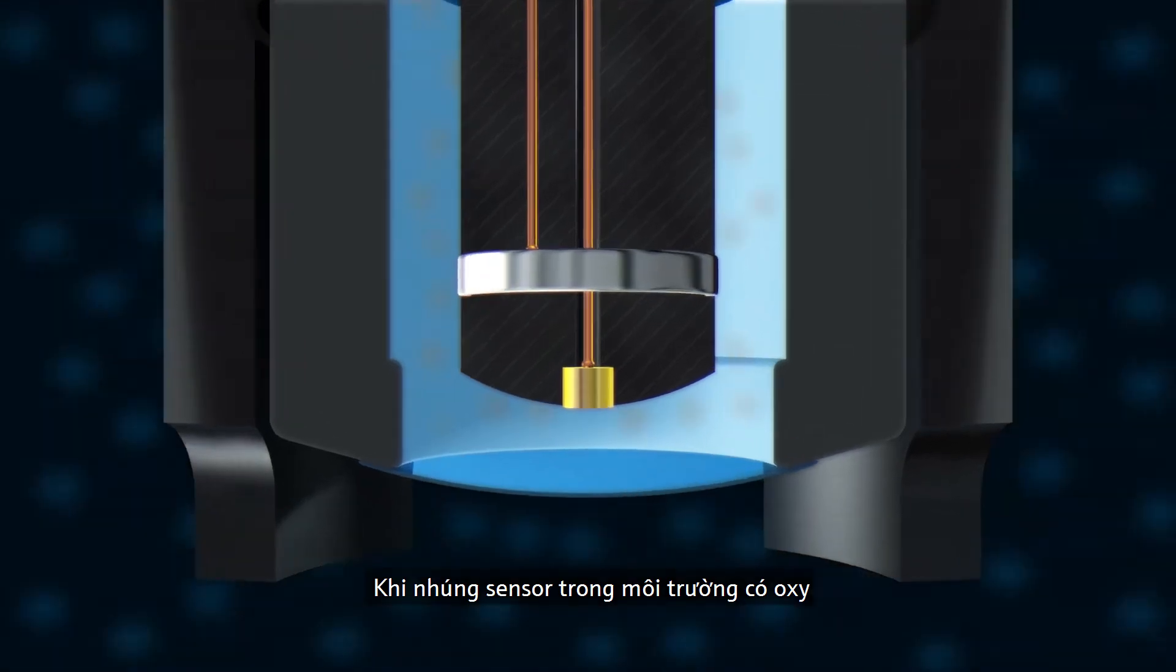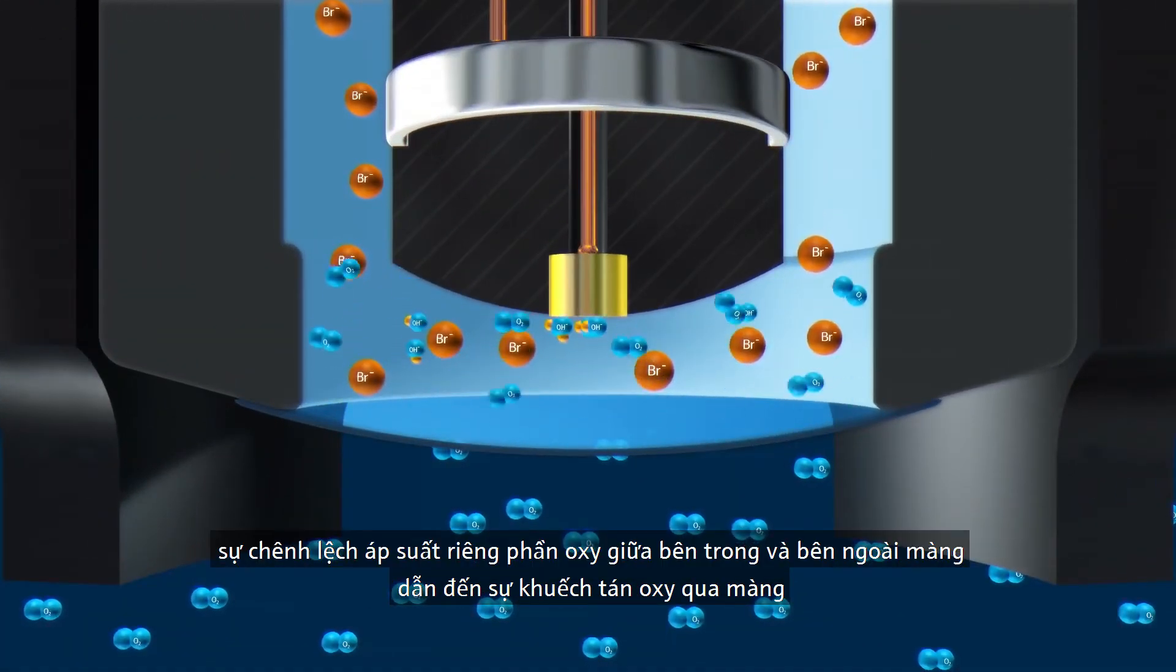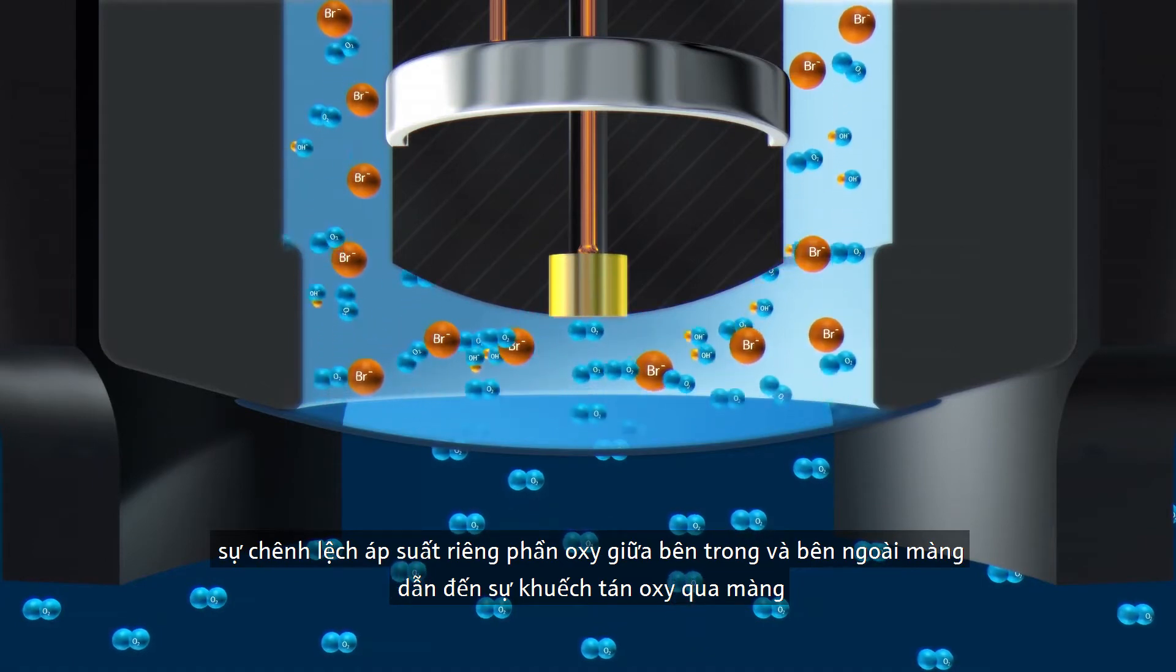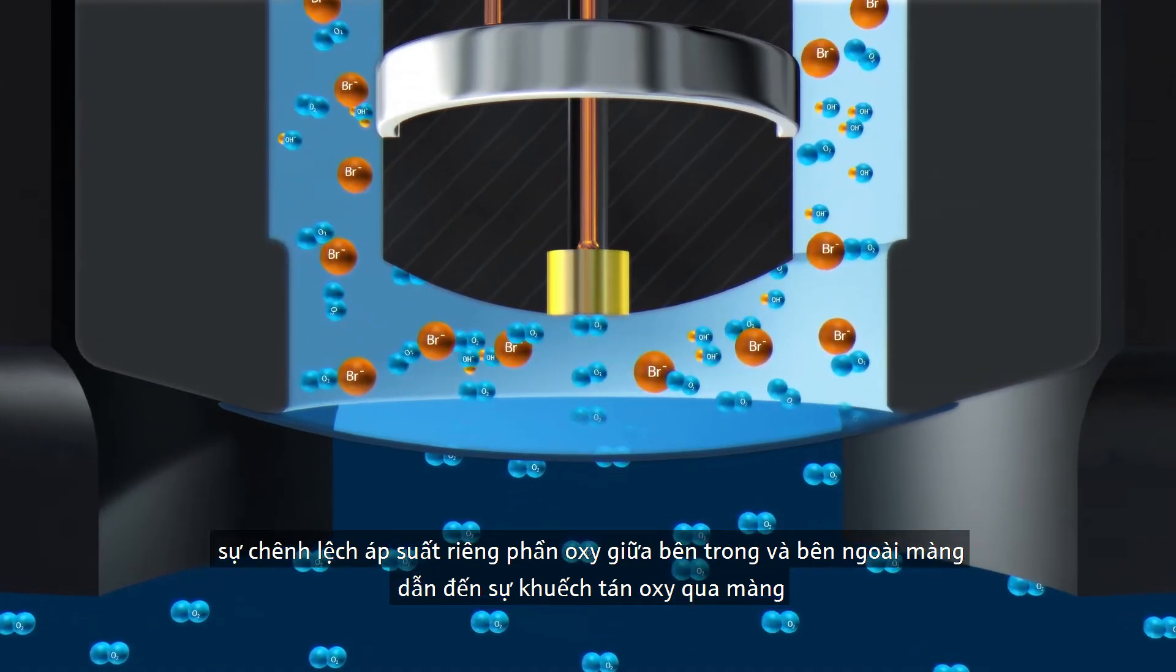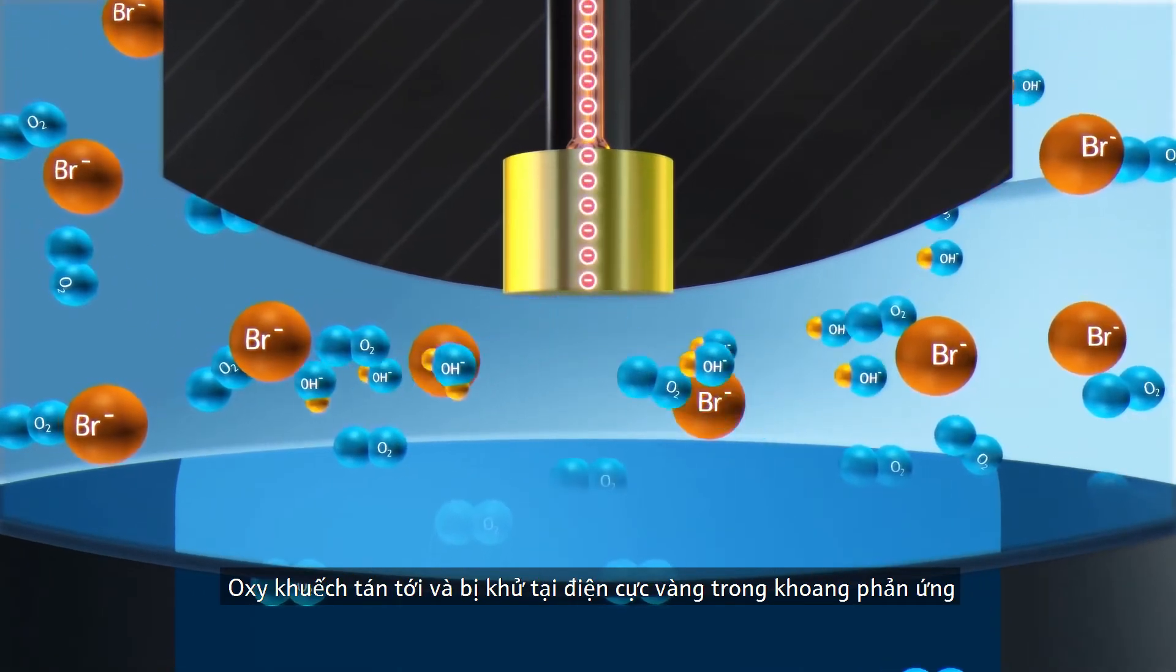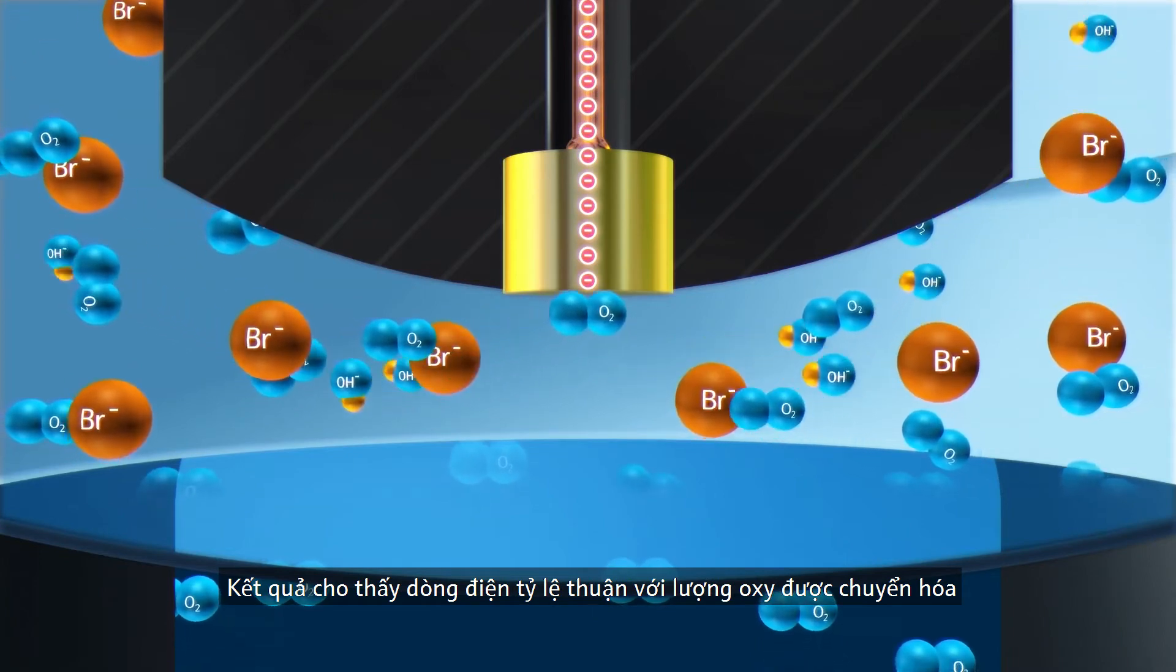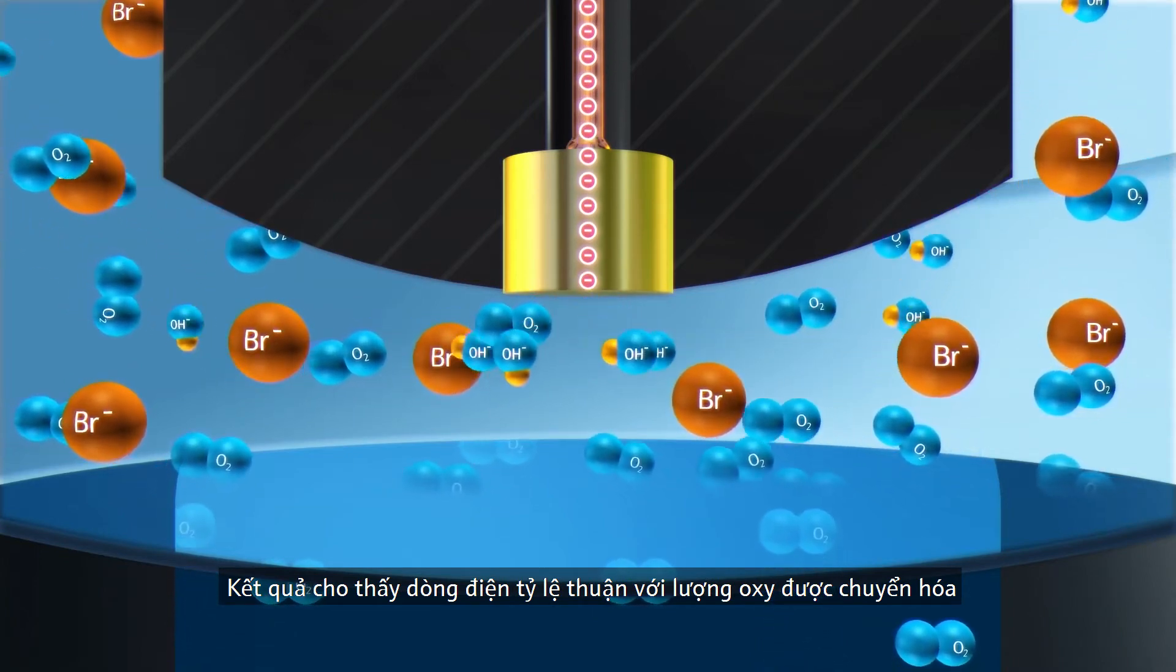When the sensor is immersed in a medium containing oxygen, the difference in the partial pressure of oxygen between the inner and outer membrane walls leads to the diffusion of oxygen through the membrane. The diffused oxygen is reduced at the gold cathode in the reaction chamber, resulting in a current flow that is proportional to the amount of transformed oxygen.